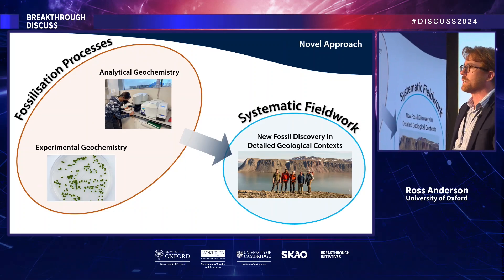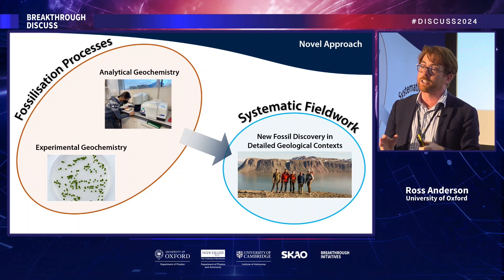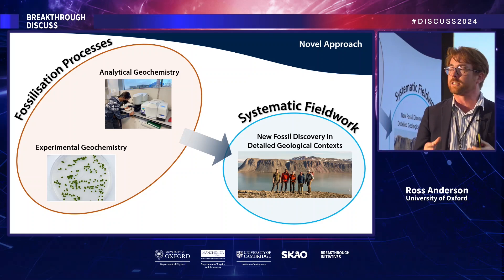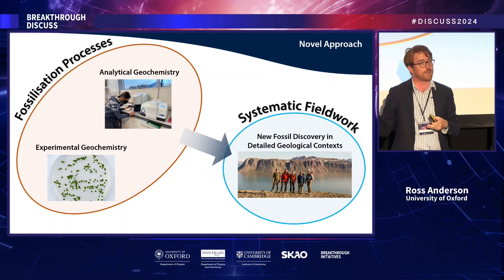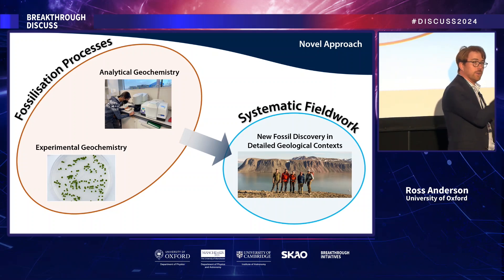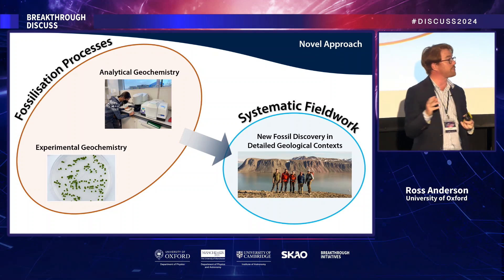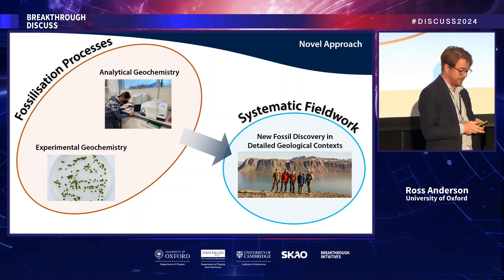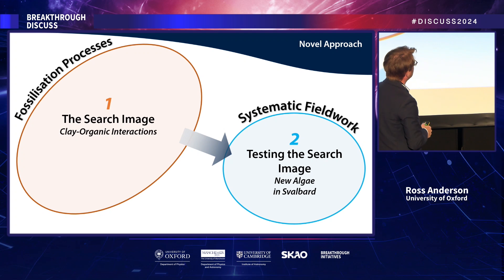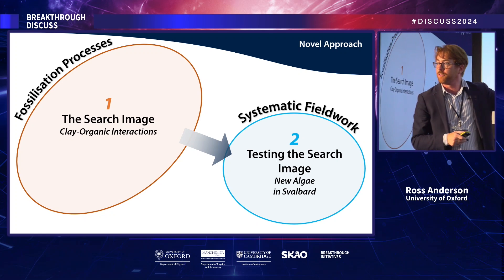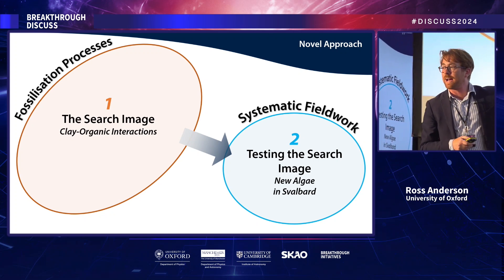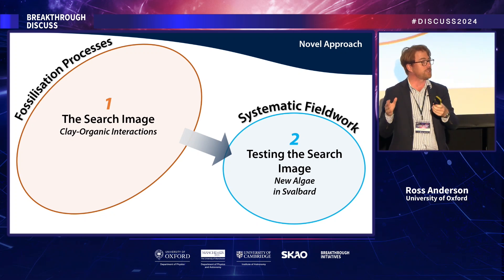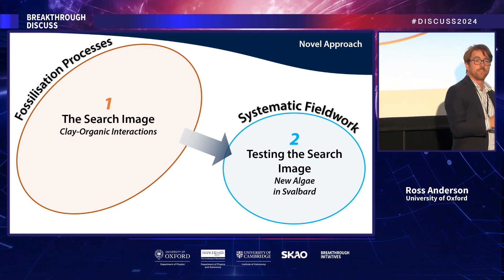A lot of my work here in Oxford over the last few years has been focused on trying to understand what conditions lead to the preservation of early eukaryotes. Because if we can understand that and do that groundwork, we're going to have a much better idea of where to go look for these fossils, and we're going to know how the record is structured — how it's biased and where we're missing data. Today I want to talk about two stories: how we're working on the chemistry to refine the search image, focusing on clay minerals and their importance to preservation, and then how we can test that search image in the field.